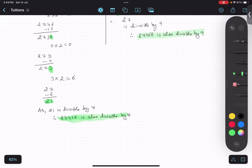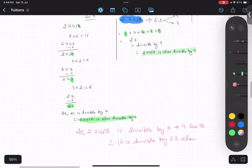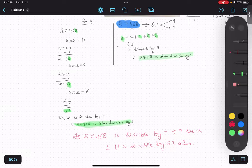As 27468 is divisible by 7 and 9 both, it is divisible by 63 also. Is this thing clear? Is this thing clear? Any doubt?